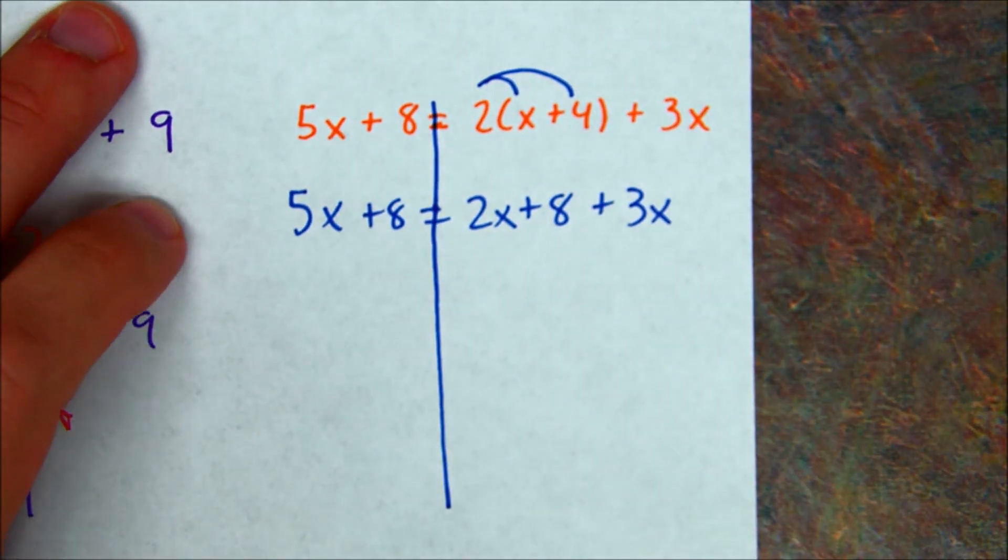Let's look at the next one. I'm going to start again, drawing my brick wall and doing the distributive property. So I distribute the 2. So I get 5x plus 8 equals 2x plus 8 plus 3x. Then I combine my like terms. So I have my 2x and my 3x gives me 5x plus 8. 5x plus 8.